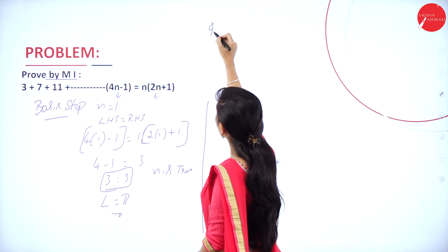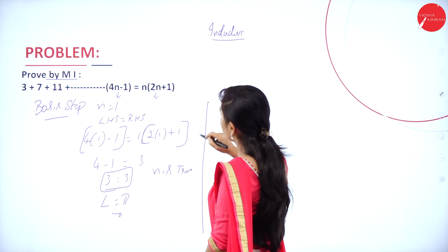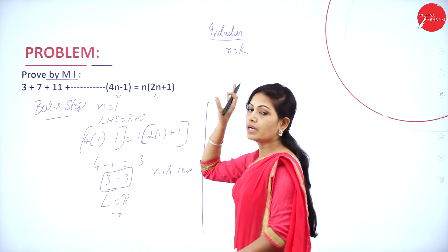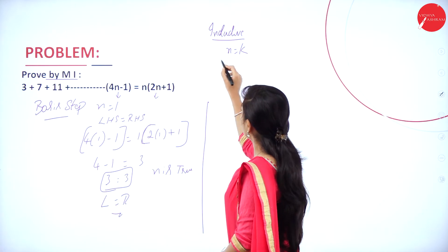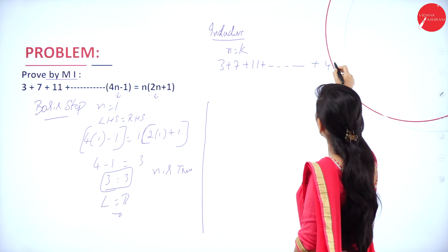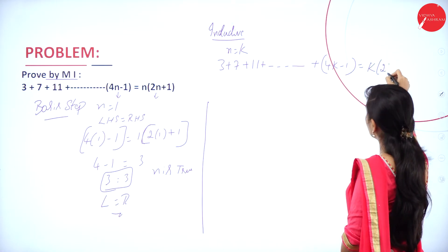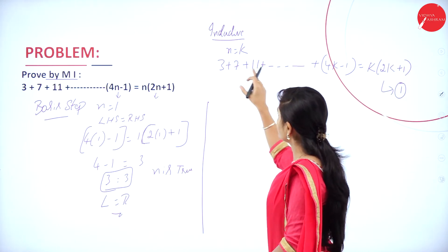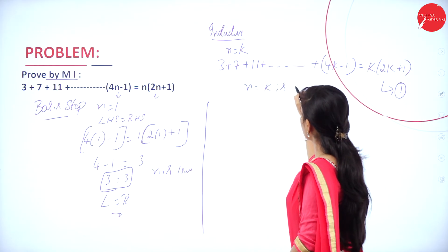The next step is the inductive step. We assume n equals k is true. So we replace n with k: 3 plus 7 plus 11 plus ... plus (4k minus 1) is equal to k into 2k plus 1. This is equation number 1. So n equals k is assumed true.